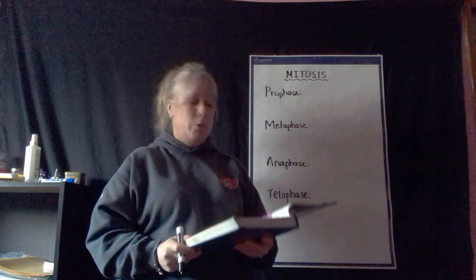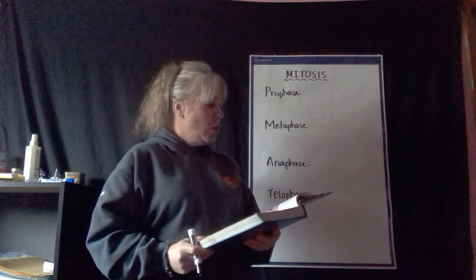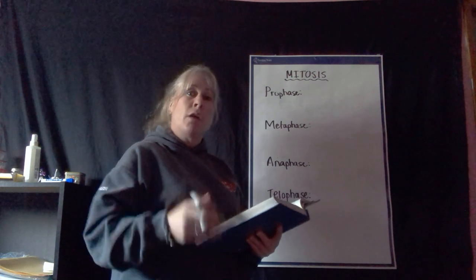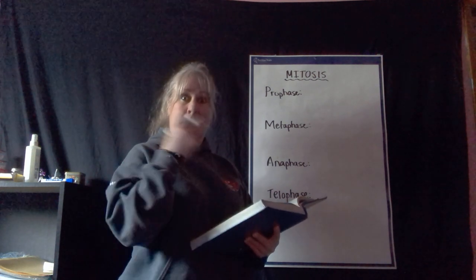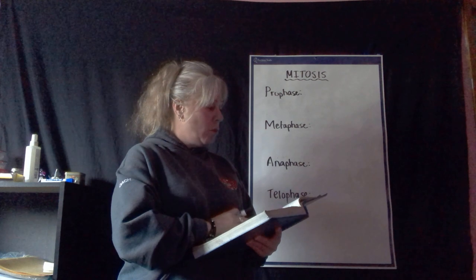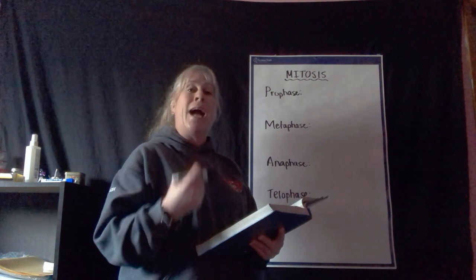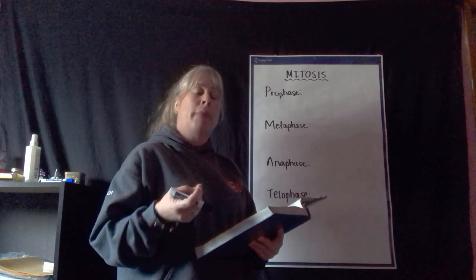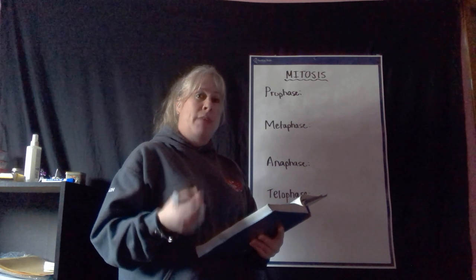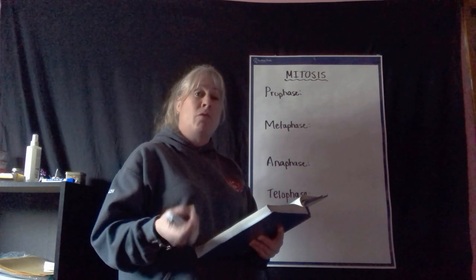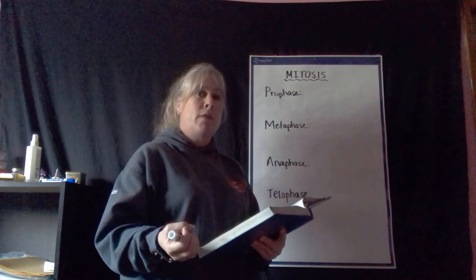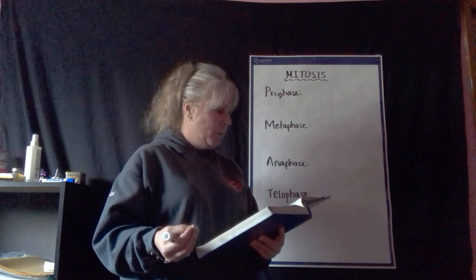Starting with the first phase, which is prophase. In prophase, remember from what I talked about before, we have that replicated double helix. The double-stranded chromosomes — you can actually see them underneath a microscope. If a cell is not ready to divide yet and going through mitosis, you can't see these under a microscope. As soon as it's ready for mitosis, they become visible.